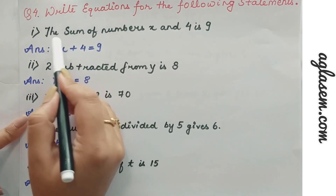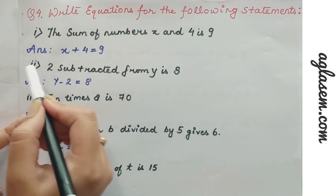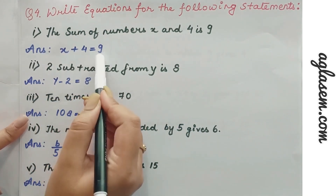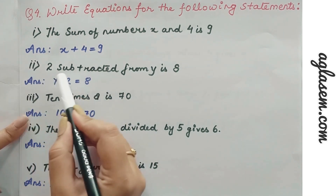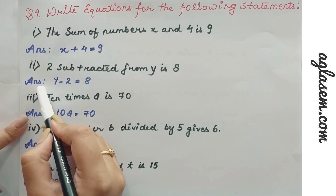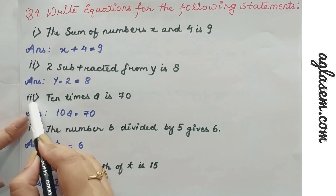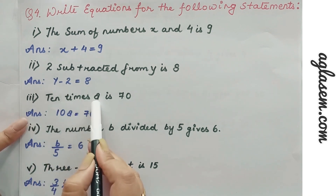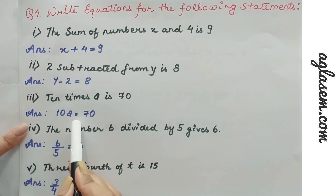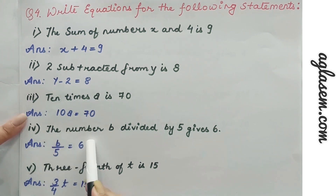The first statement is: the sum of numbers x and 4 is 9, so the equation will be x + 4 = 9. Second: 2 subtracted from y is 8, the equation is y − 2 = 8. Third: 10 times a is 70, the equation is 10a = 70.